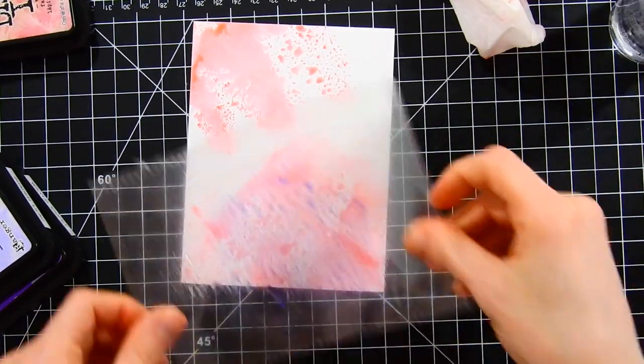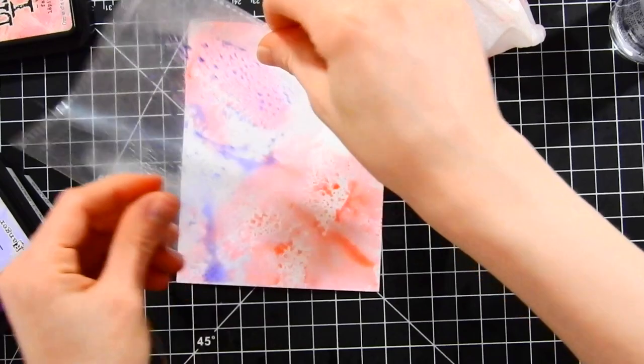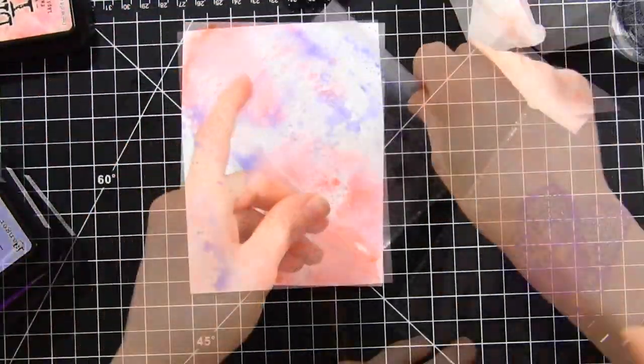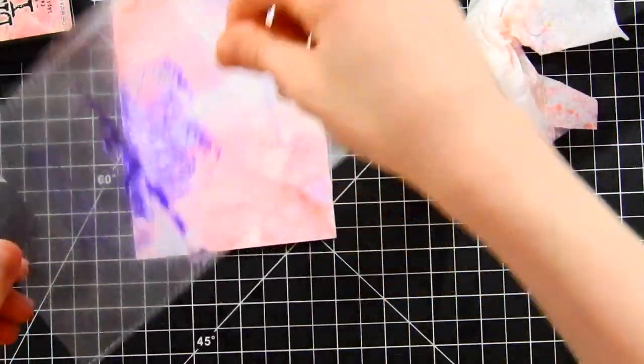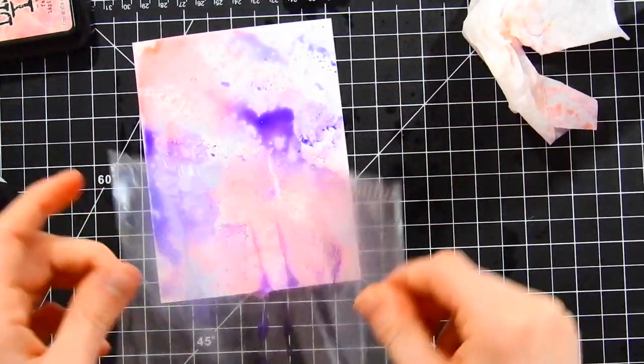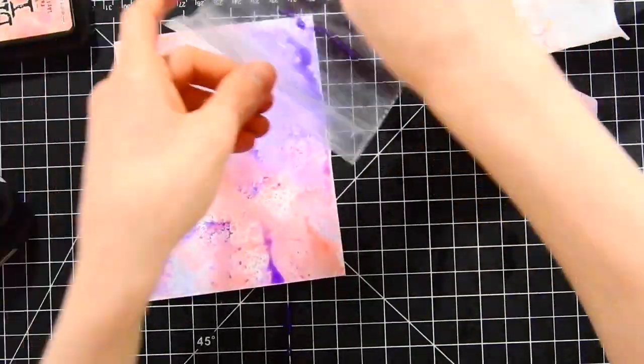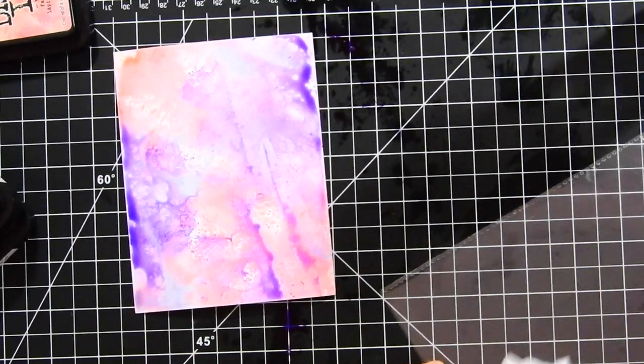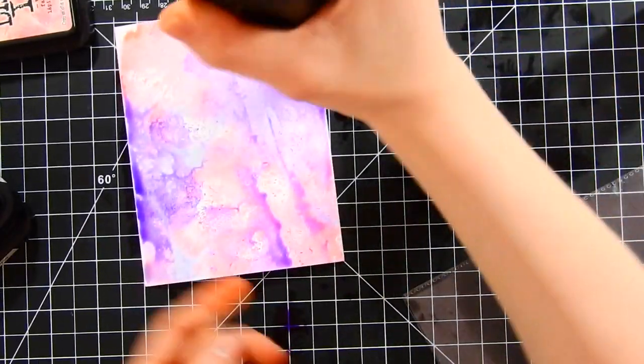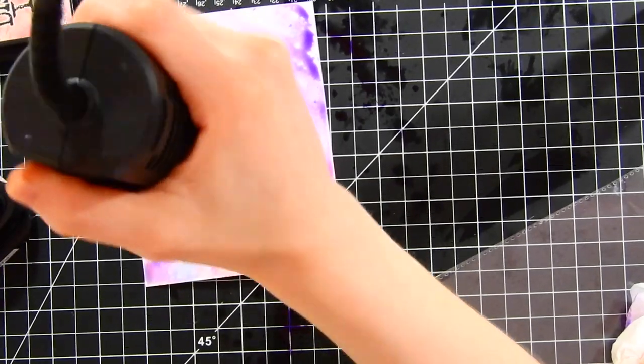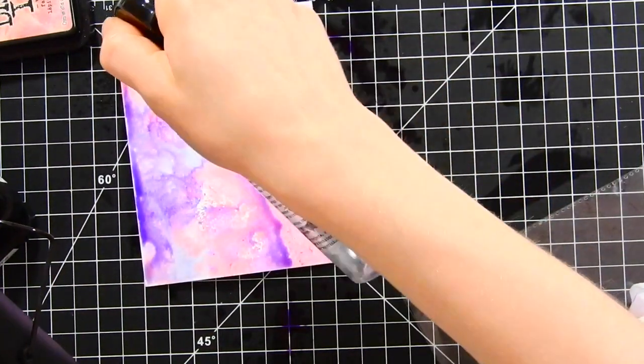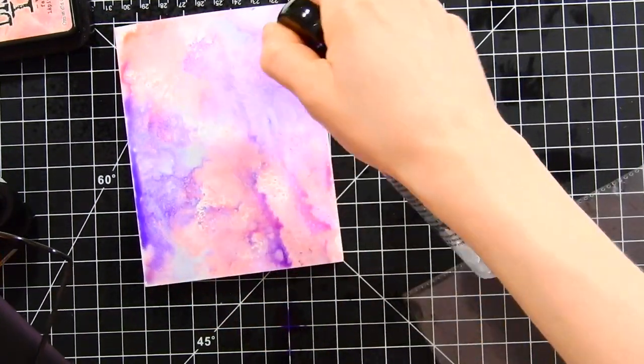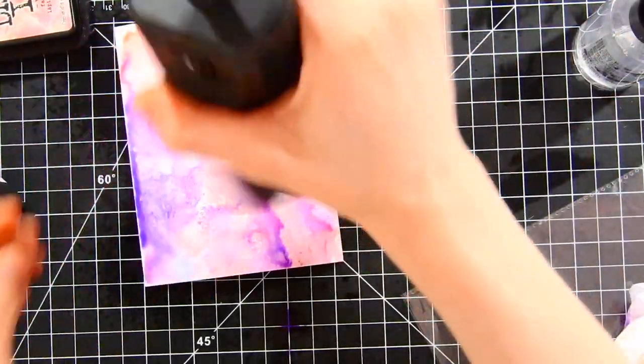For the third color, I'm going to take some wilted violet and again do the same ink smooshing. I'm also allowing the color to blend into each other a lot to really allow these colors to mix and create new colors. The result is beautiful. I heat set this and I'm taking my distress sprayer and kind of spritzing some of the more intense areas to soften them out just a little bit. I didn't want them to be too harsh.